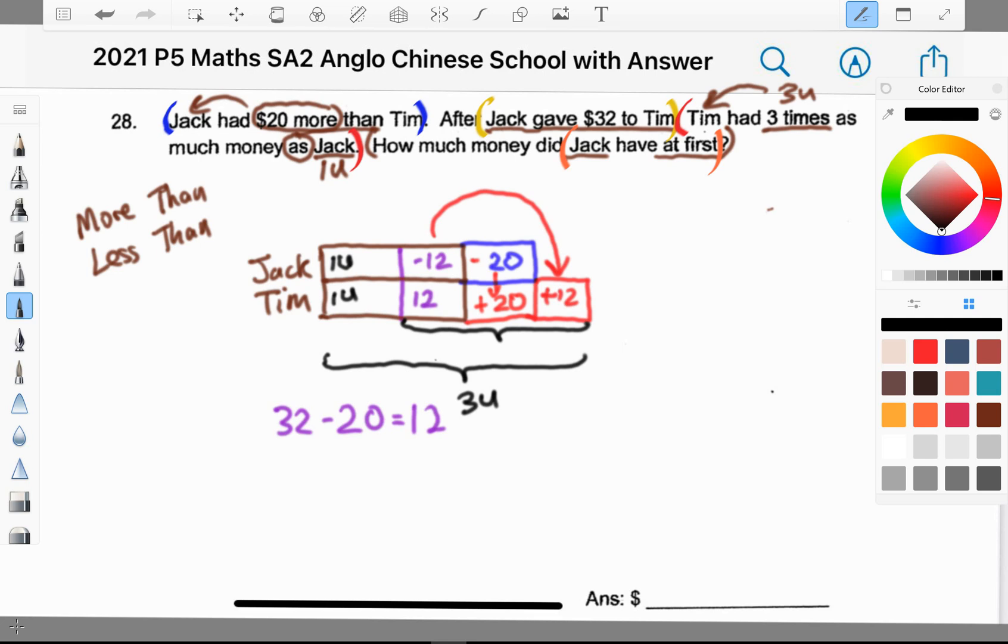Tim is three units in the end. I always ask my students this particular P1 question: one unit plus how many units give us three units? That's two units. Two units is 12 plus 20 plus 12. When I add them all up, it's 44.